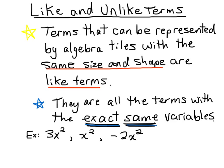In this tutorial, we're going to look at what like and unlike terms are. Terms that can be represented by algebra tiles with the same size and shape are called like terms. So any terms that can be modeled with x squared tiles are like terms. When you are looking at the polynomials, they're all the terms that have the exact same variables.